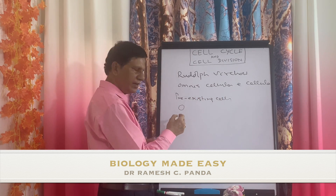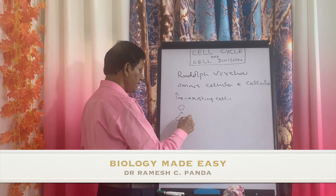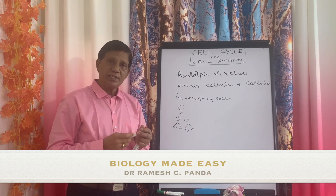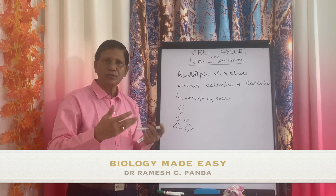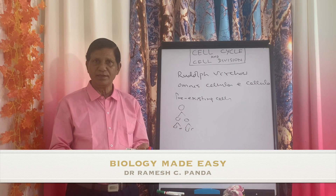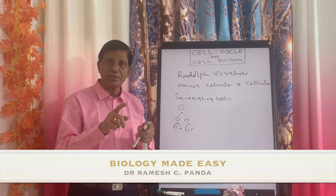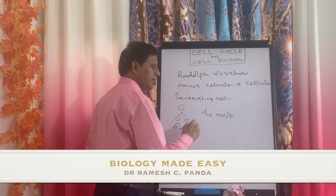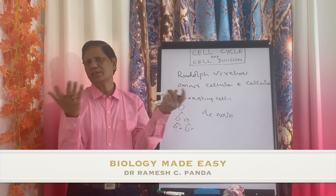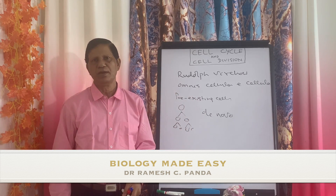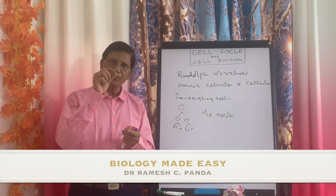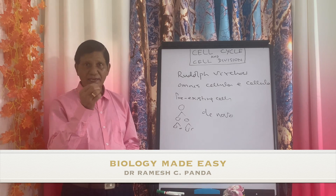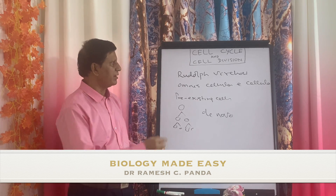That means if one cell is there, it can give rise to two cells, and they can give rise to more cells — one cell becomes two, two becomes four, and so on. But these cells never arise de novo, meaning out of nothing. Cells cannot be produced out of nothing; only from a pre-existing cell can new cells arise. So the idea of cell division was first given by Rudolf Virchow.